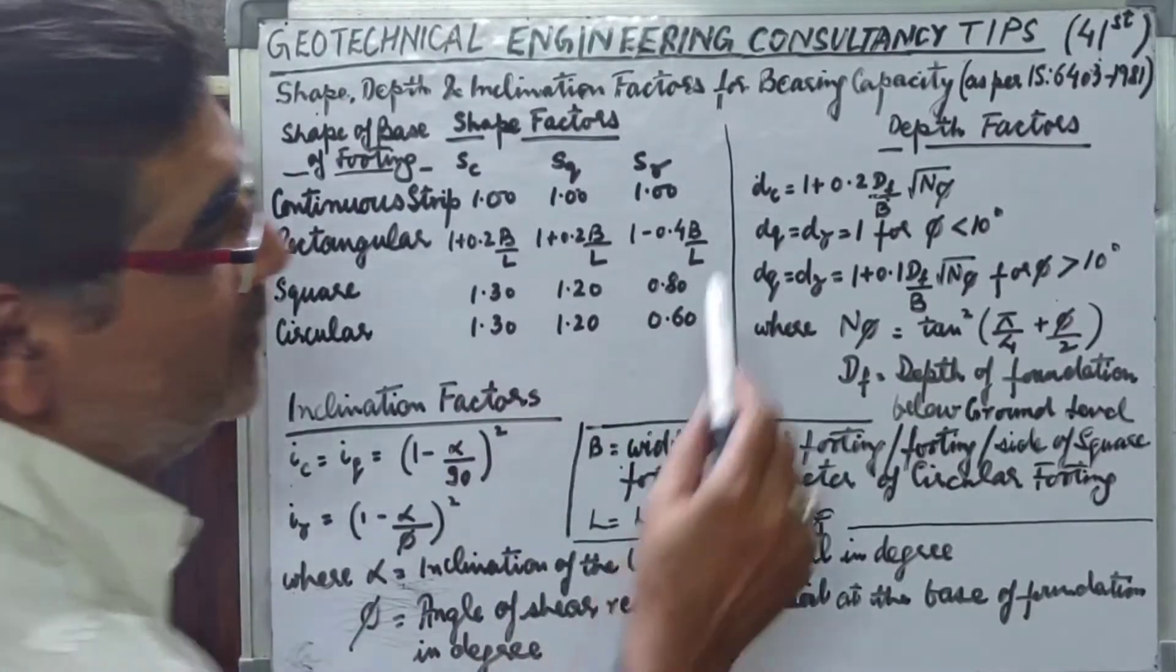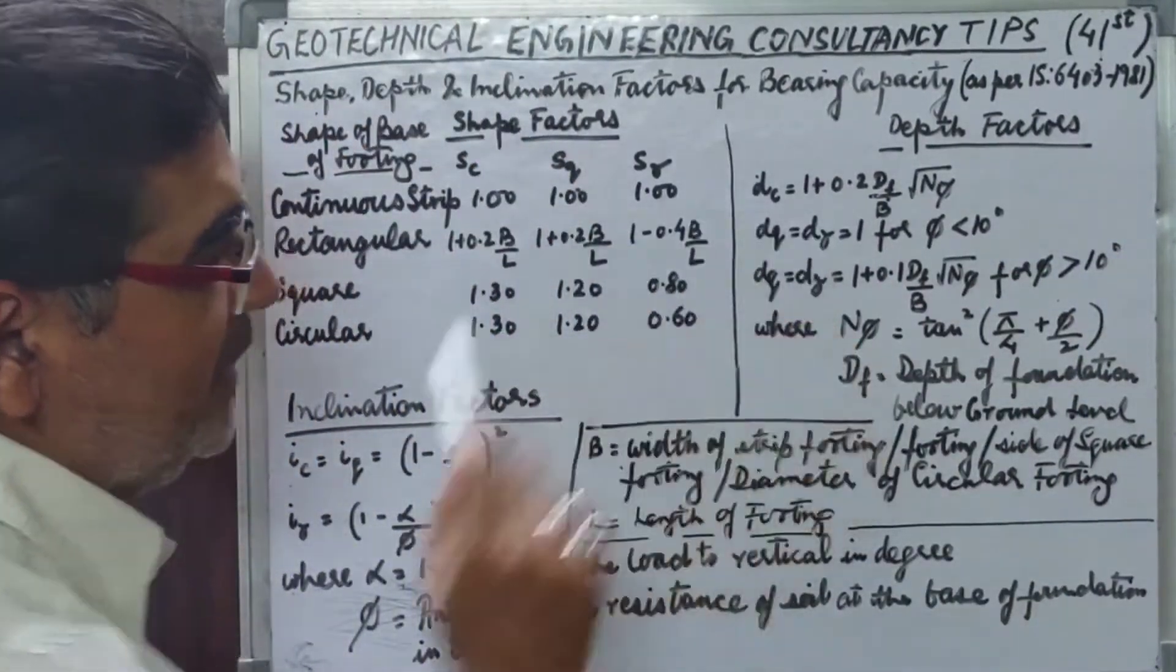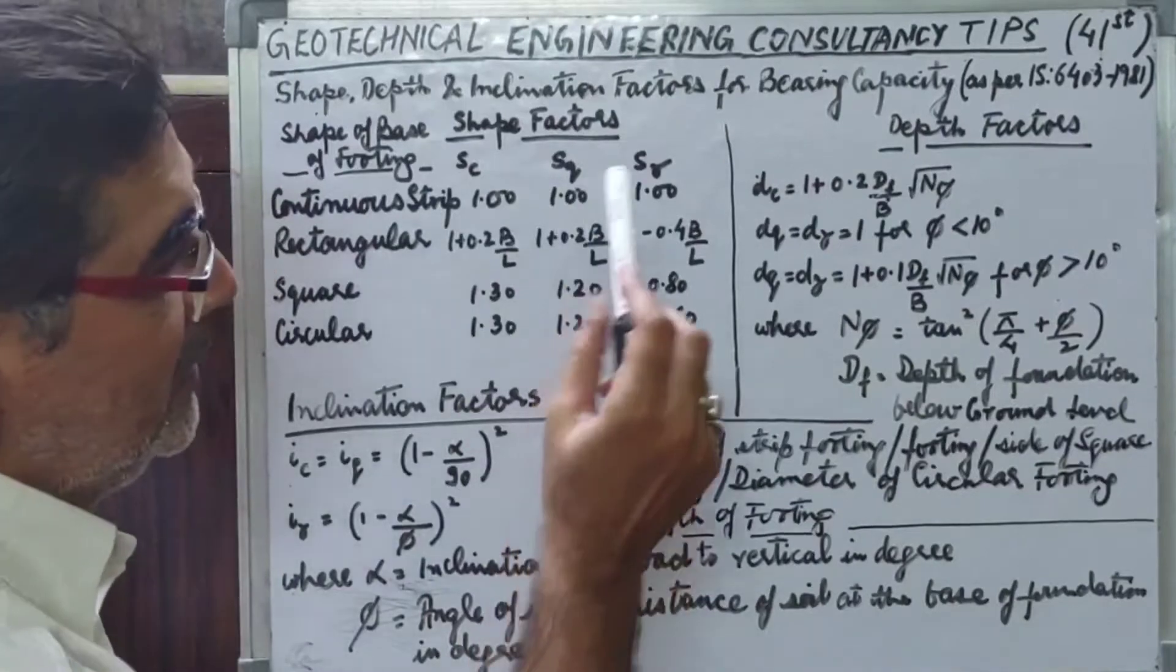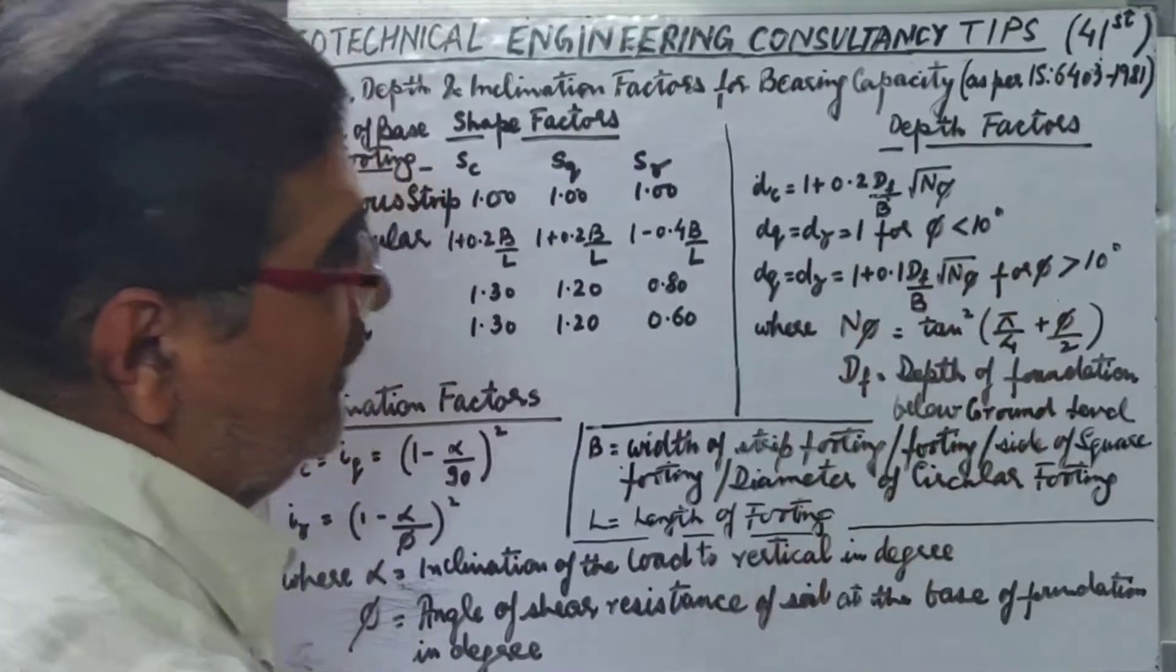Now coming over to the depth factor calculations which are being referred to as Dc, Dq, and D gamma. The formula for Dc is 1 plus 0.2 Df upon B under root N phi.